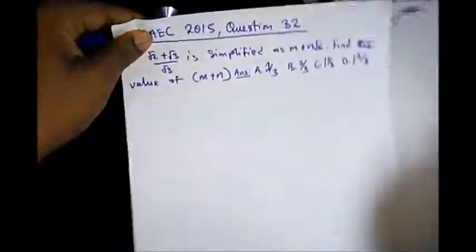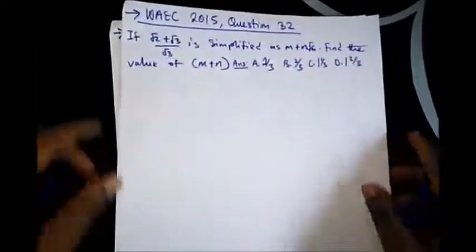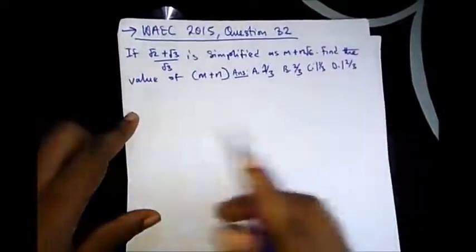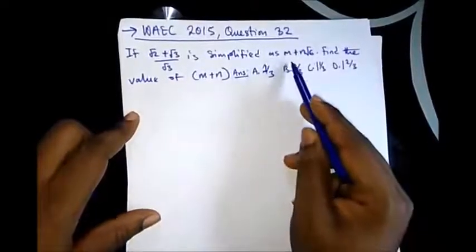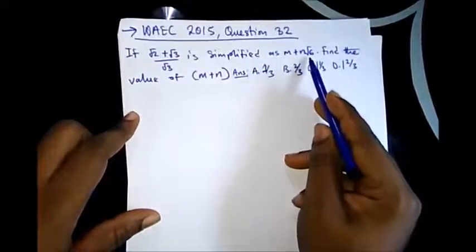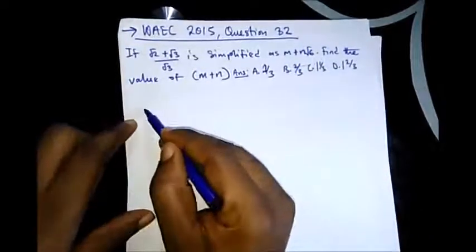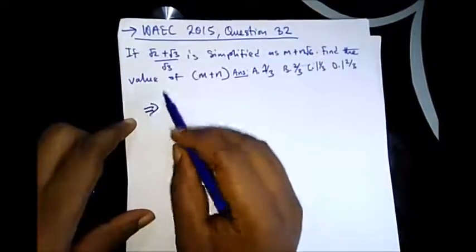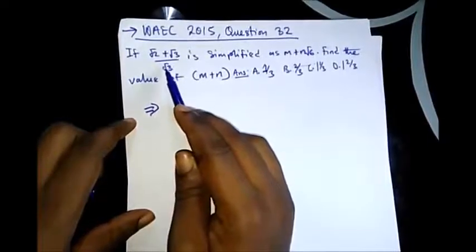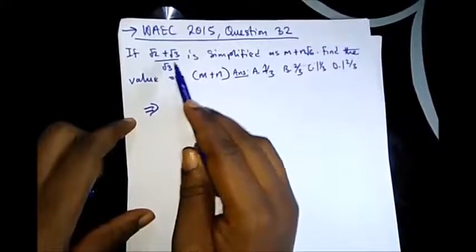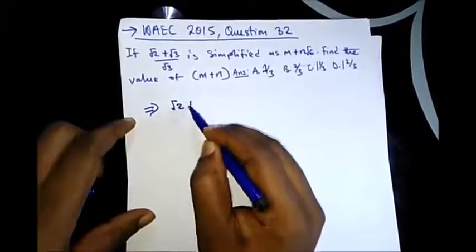Another question we have here is an OBJ question from WAEK 2015 question 32. It says if (√2 + √3)/√3 is simplified as m + n√6, find the value of m + n. So from here, what do we do? We have to simplify this. Now we are having a root as the denominator, and in surds it can't be so, so we have to rationalize. In rationalization we have (√2 + √3)/√3 multiplied by √3/√3.